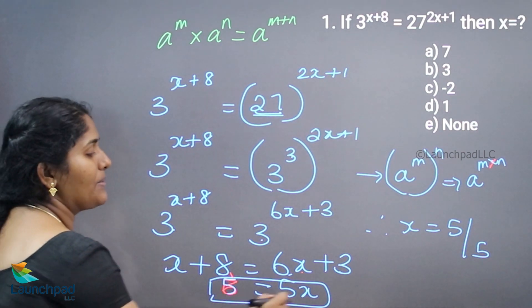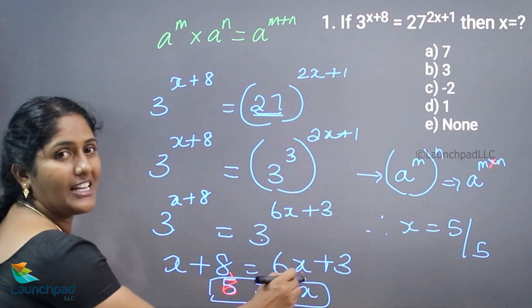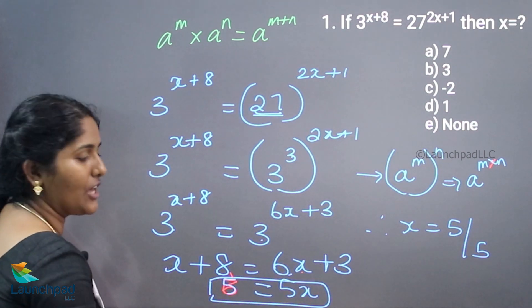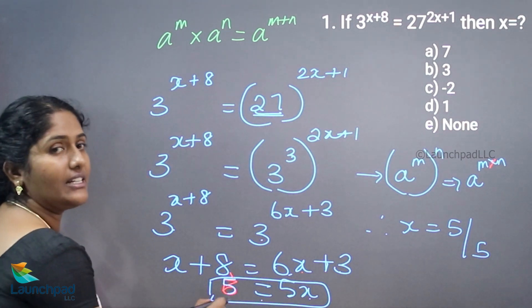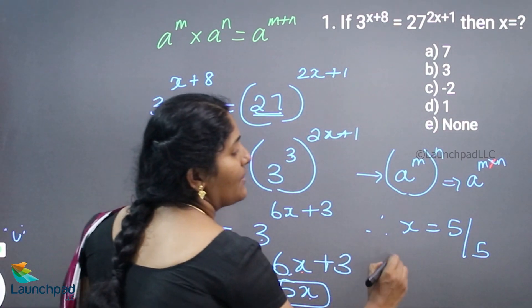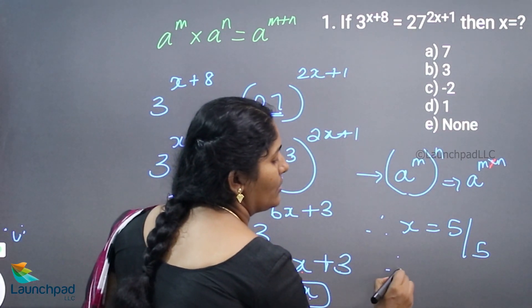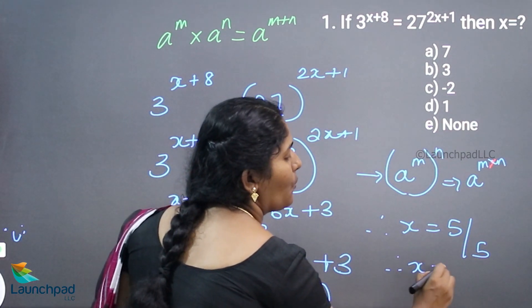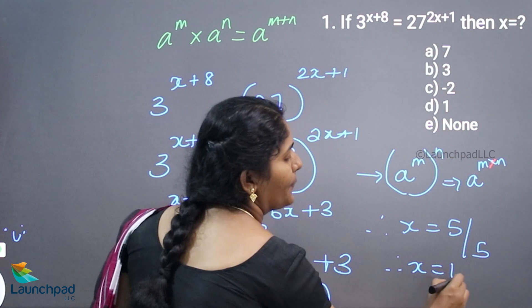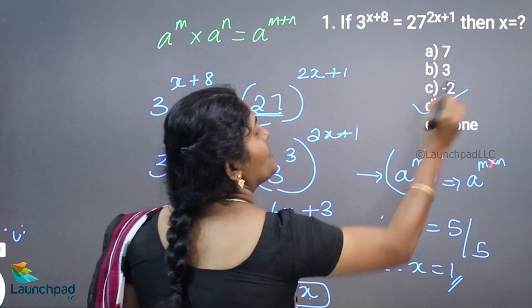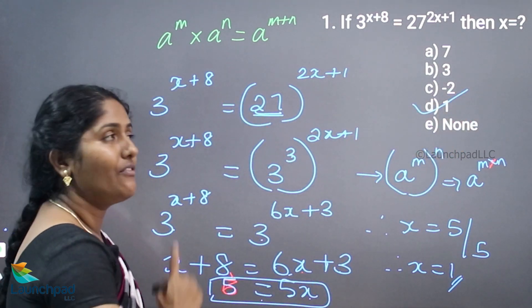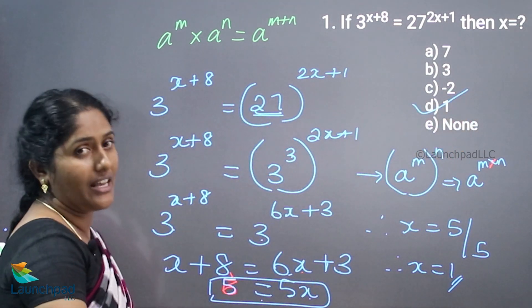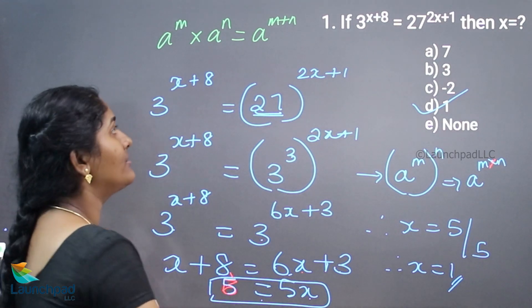So x coming here means 6x minus x gives 5x. Therefore 5x is equal to 5, hence x value is 1. Option D is correct. We will move on to your next question.